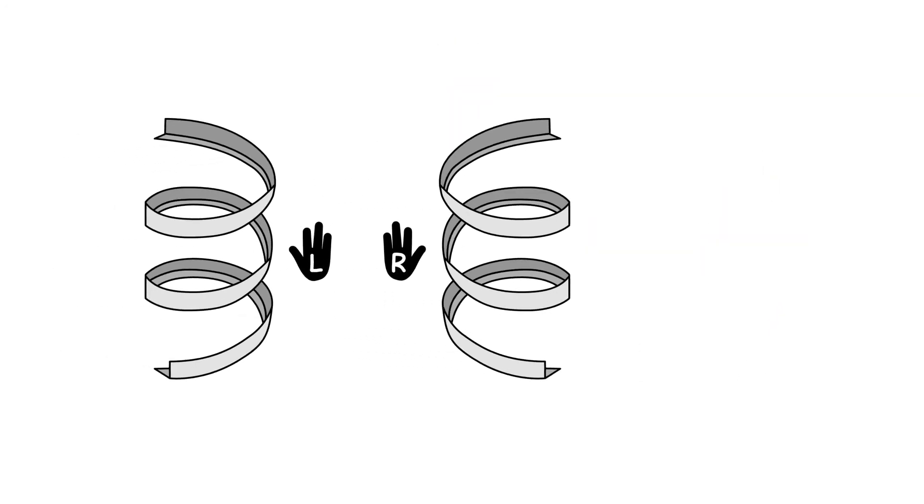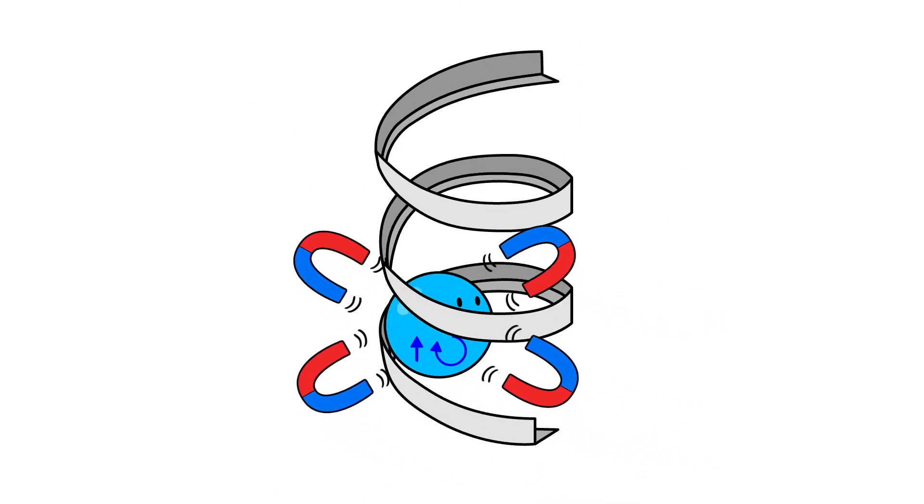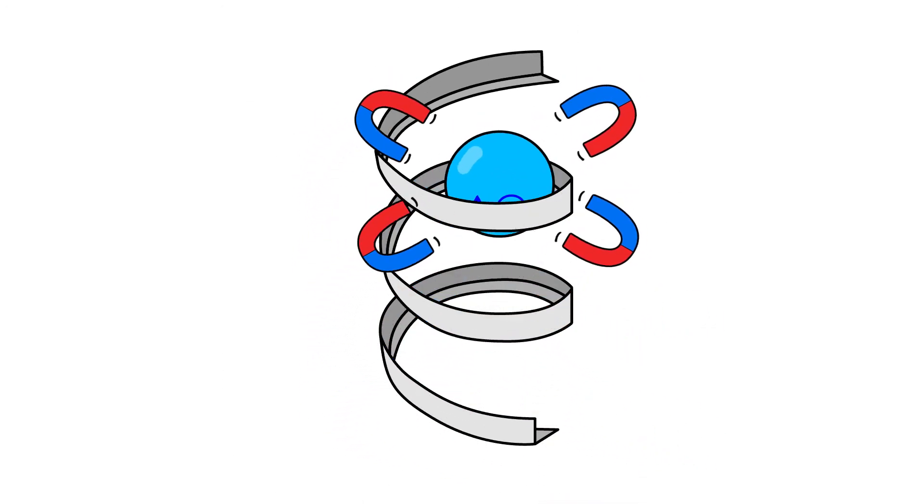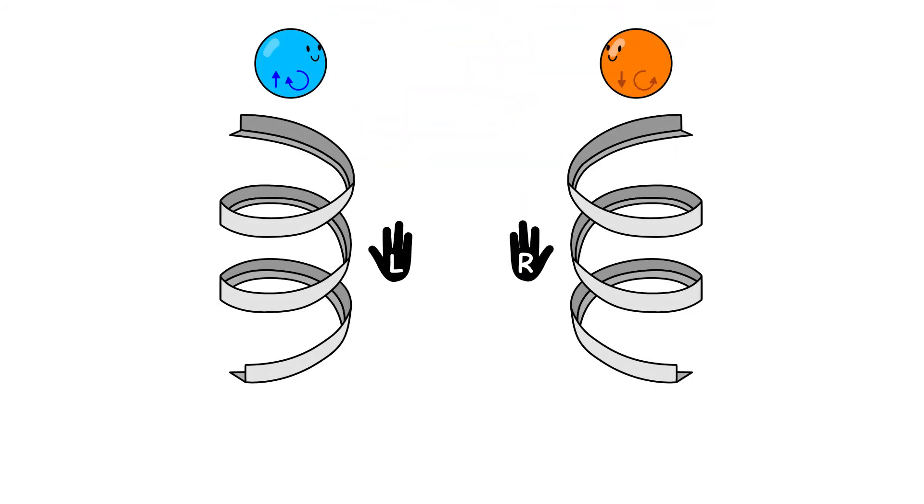Chiral molecules have two different symmetries, similar to right or left-handedness, which are called enantiomers. When electrons are moving through chiral systems, they behave as if there is a magnetic field acting on them. This magnetic field interacts with the magnetic dipole of the electron, namely with the spin of the electron. Therefore, when an electron is transferred through chiral molecules, one spin is preferred over the other.